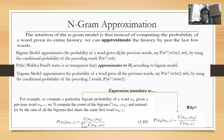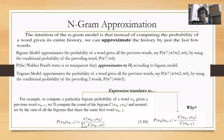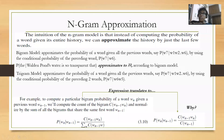A bigram model approximates the probability of a word given all previous words — say P(w7|w1...w6) — by using the conditional probability of just the previous word. So probability of 'the' given 'Walden's pond's water is so transparent that' approximates to probability of 'the' given 'that.' You don't really care about 'Walden's pond's water is so transparent.' For the trigram model, P(w7|w1...w6) ≈ P(w7|w6, w5).